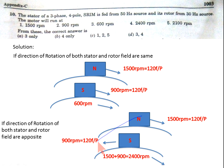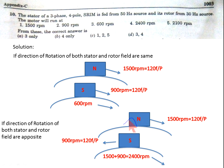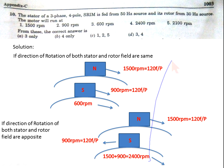If the direction of rotation of both stator and rotor fields are opposite, the rotor field rotates in the opposite direction to the stator field. For synchronization, the rotor must rotate at the sum of 1500 and 900 rpm, which is 2400 rpm. So statement 4 (2400 rpm) is also correct.